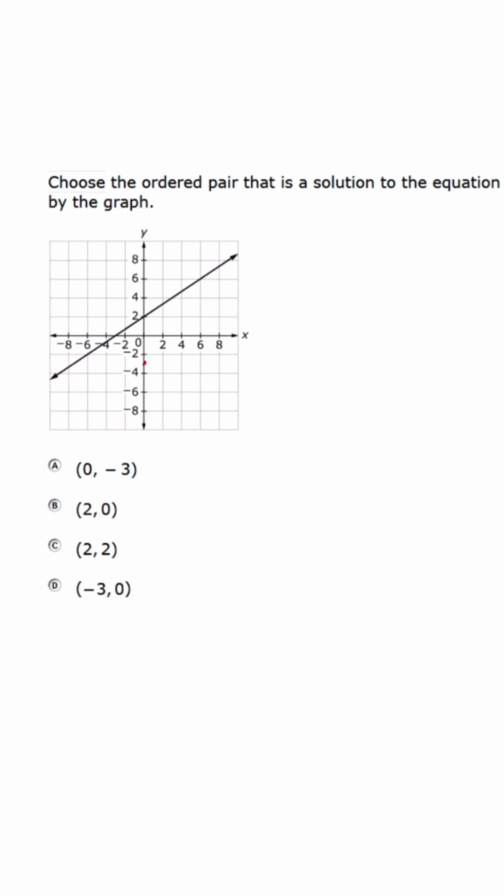So (0, -3) is right here. That does not fall on the line. (2, 0) is right here. That doesn't fall on the line. (2, 2) is right here, and this does not fall on the line either.